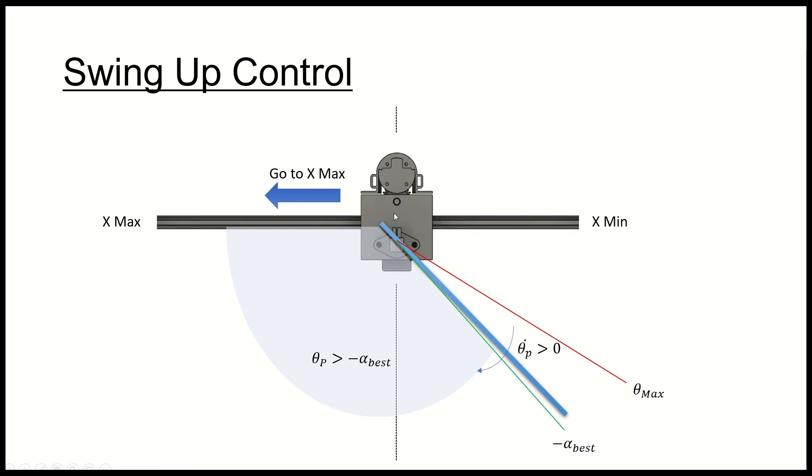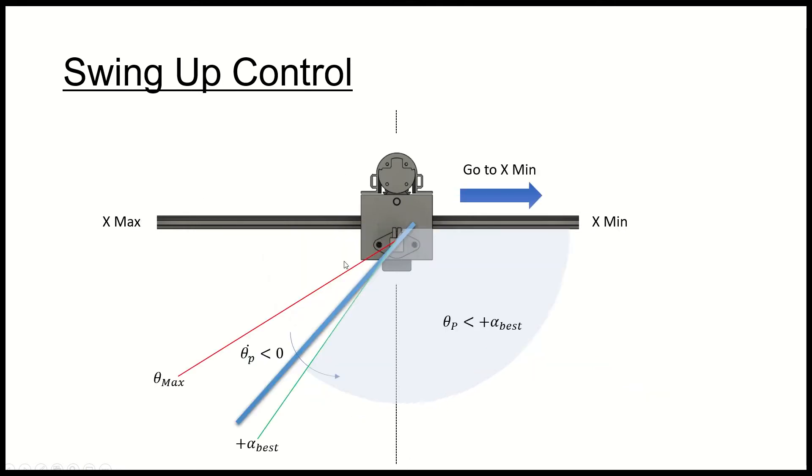will basically move the cart or change the reference to the x max position. Then similarly for the other side, it will wait until the angular velocity is then negative and going in this direction and the theta angle is less than this alpha best value. So once it crosses this green line, that's when it's going to switch to this x min position.